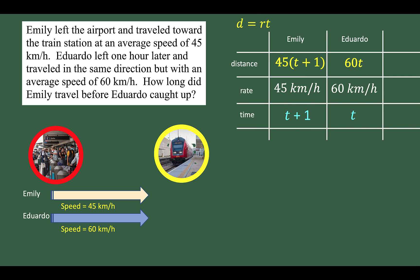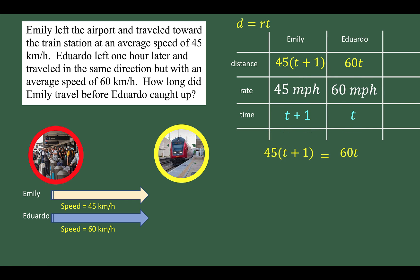What equation are we going to use to solve this problem? Notice that the distance traveled by Emily and the distance traveled by Eduardo would be the same when Eduardo caught up with Emily. That means if Eduardo traveled for t hours and Emily traveled for t plus 1 hours, the distances each traveled must be equal. So these two distance expressions must be set equal to each other, and we now have our equation.